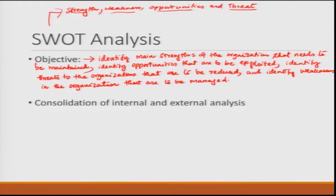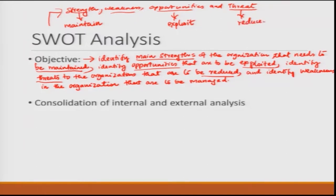To summarize: strengths are to be maintained, opportunities are to be exploited, threats are to be reduced, and weaknesses are to be managed. This gives you all possible aspects of what an organization faces — the strengths show how the organization can grow, weaknesses show where we need to pay attention so we can manage them, opportunities show where we can grow and become big, and threats show what we need to reduce so the organization flourishes.